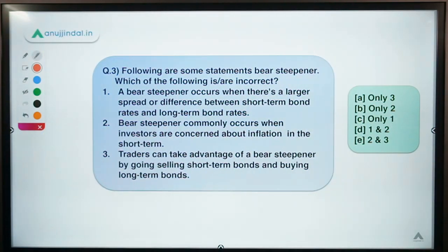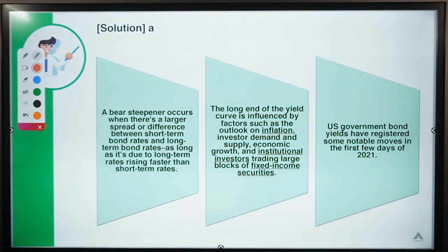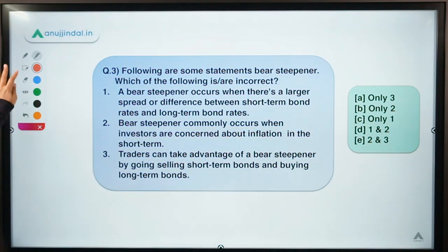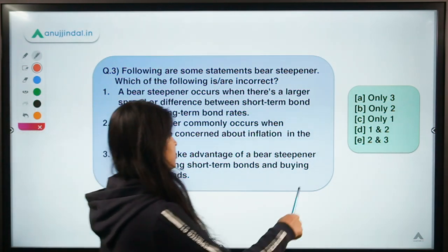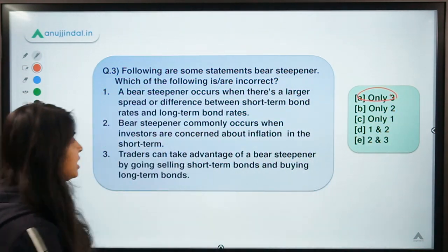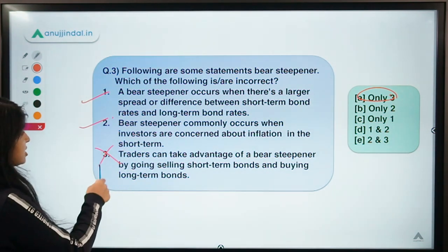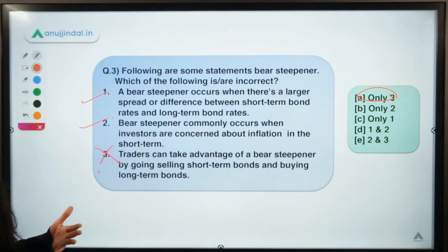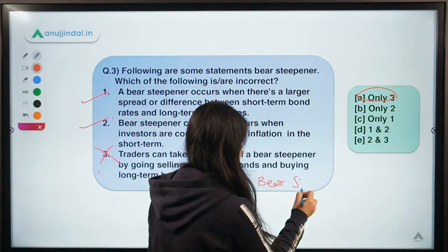Moving ahead to the third question: the question says following are some statements about a bear steepener — which of the following is or are incorrect? Here also you have to select the statements which are not correct in respect of the concept called a bear steepener. The correct option for this question is option A, meaning only statement 3 is the incorrect statement, whereas statements 1 and 2 are correct.